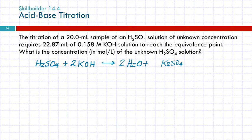Now, we're going to solve this just using solution stoichiometry. Yes, it's a titration, it's an acid-base reaction, chapter 14. But the technique for solving is chapter 13. So I'm going to take the information and write it under my equation. 20 milliliters of H2SO4. And it says I have 22.87 milliliters of the KOH, and it gives me a concentration of the KOH, 0.158.